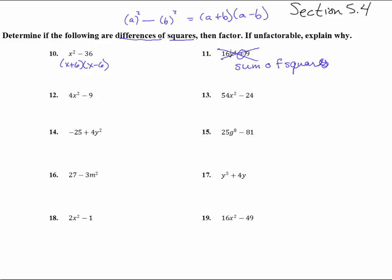And you can see this 16y to the fourth could have been a square. Nine is a square, but it didn't have a difference in it. Here, yeah, look at that. We have a difference. So this right here is 2x plus 3, 2x minus 3.